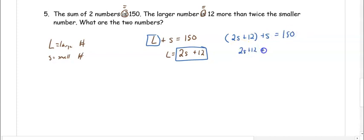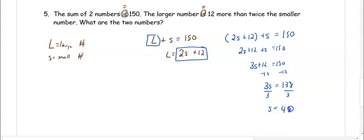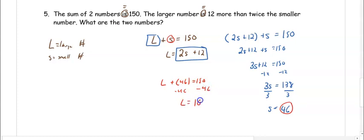We combine the S's: 3S plus 12 equals 150. We subtract 12 from both sides: 3S equals 138. Dividing by 3, S equals 46. Then substituting in to get the large number: L plus 46 equals 150. Subtracting 46 from both sides, L equals 104. Our ordered pair is 104 comma 46. The large number is 104 and the small number is 46.